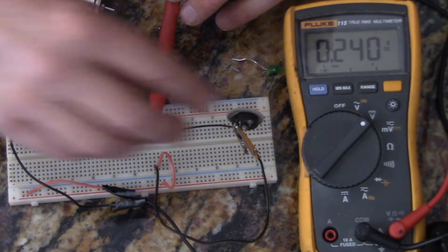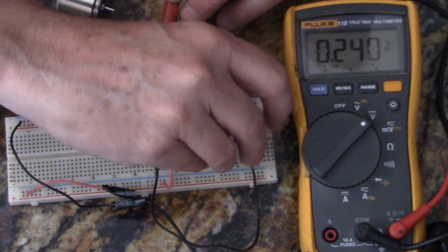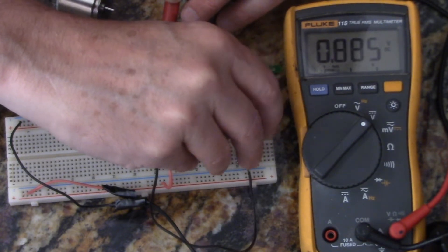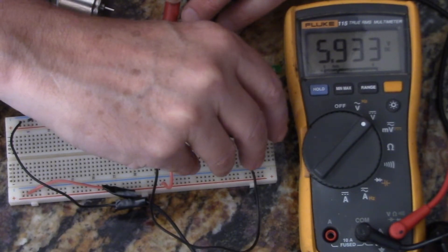So this is about 0.2 volts and then as we change this resistance we can go up all the way up to almost the full voltage of six volts, almost.